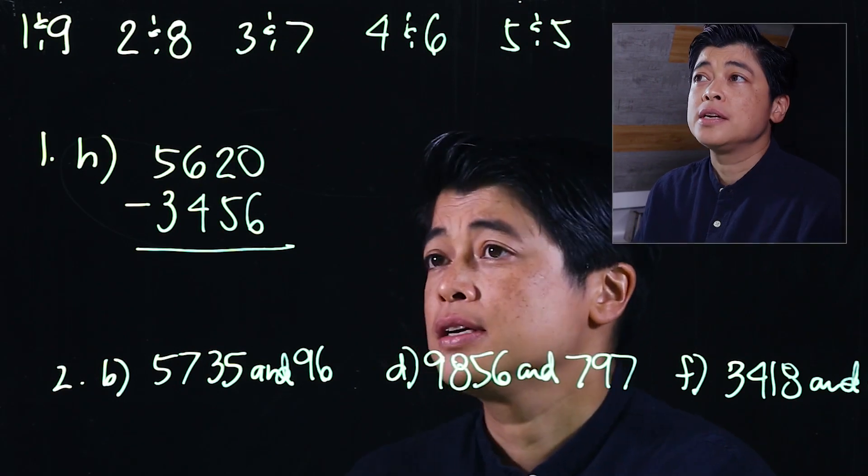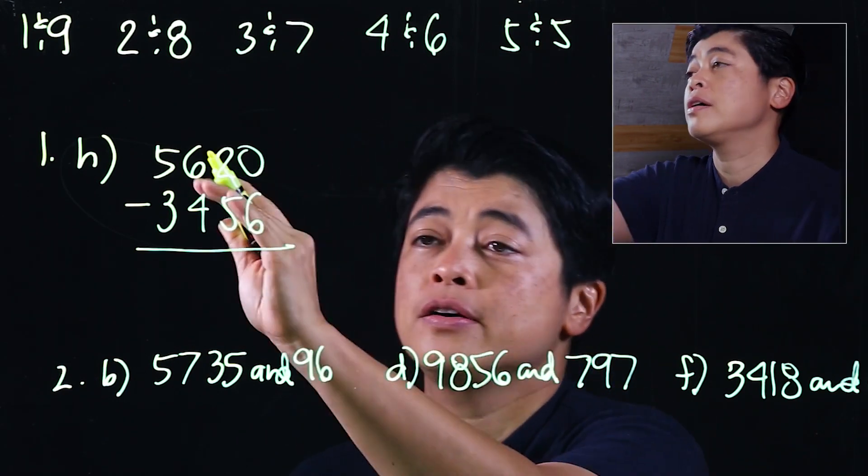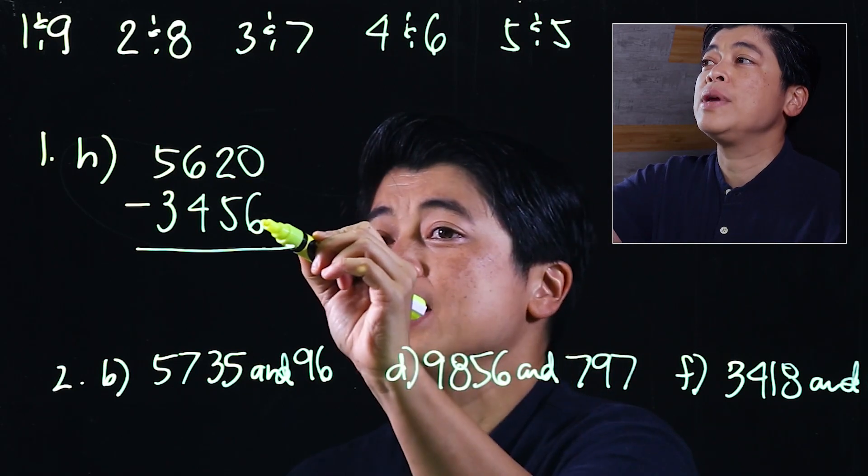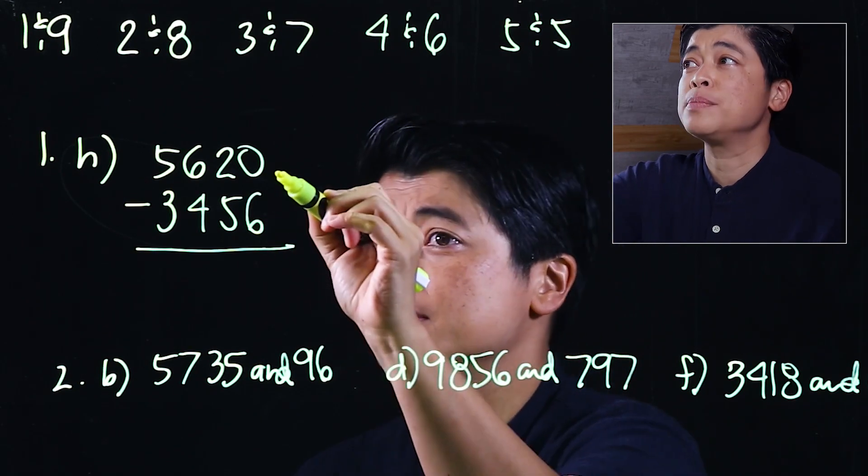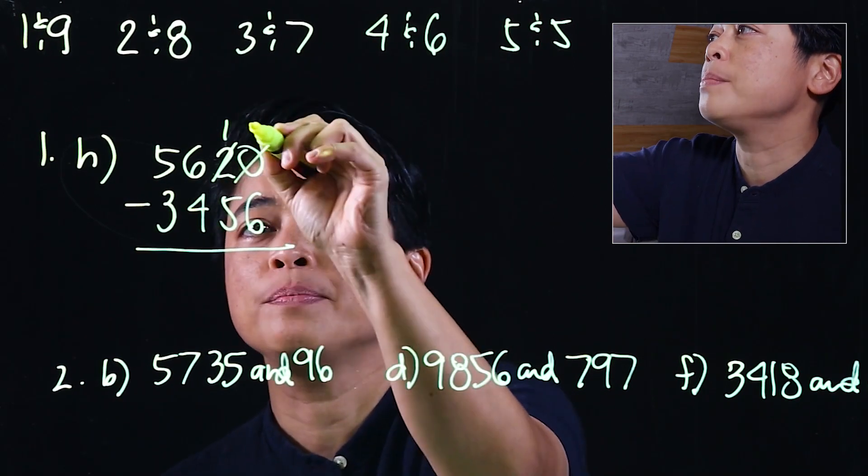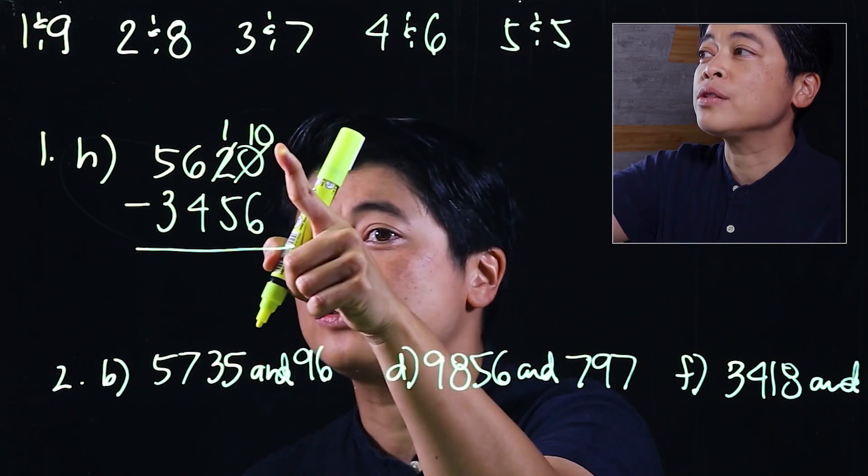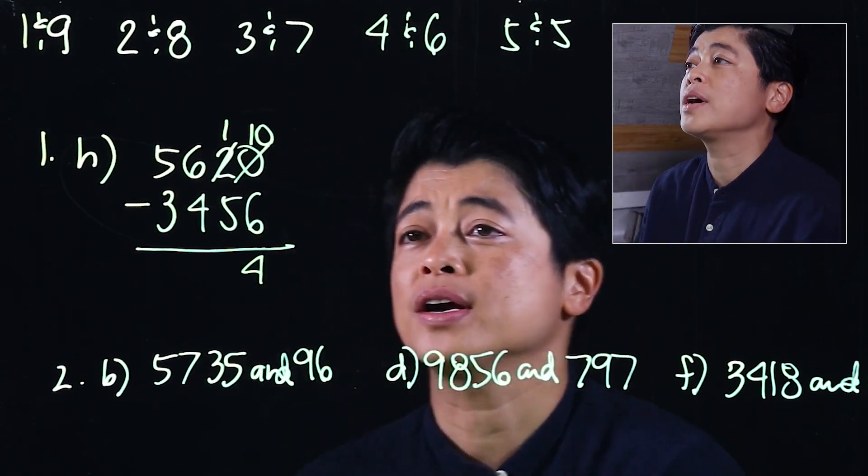The first problem is already written in computational form, so all we have to do is subtract. We start with the far right and we can't take away 6 from 0, so we need to borrow. This becomes 1, regroup becomes 10. Therefore from 6 we need 4 more to get to 10, so that would be 4.